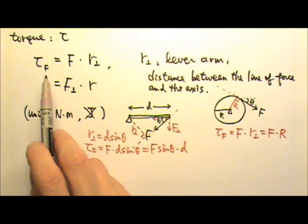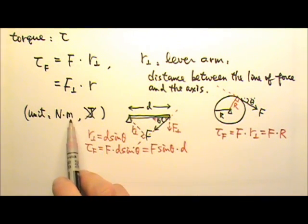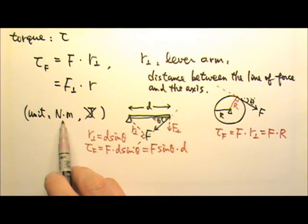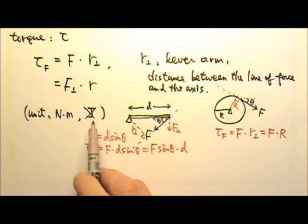By the way, the unit for torque is, since it's force times distance, it's Newton times meter, which happens to be exactly the same as the unit for work, because work is force times displacement. But we do not use joules for the unit of torque, because we reserve joules for work and energy, and torque is not work or energy.